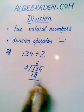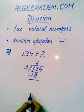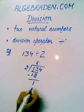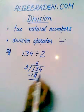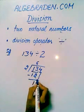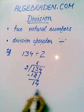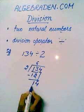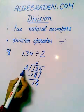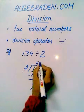Now subtract 12 from 13. It gives us 1 as remainder. Now write the next digit next to the remainder. It gives us 14. 14 is completely divisible by 2 at 7.